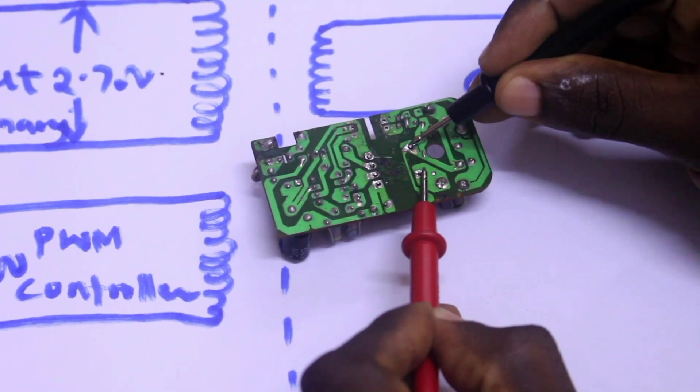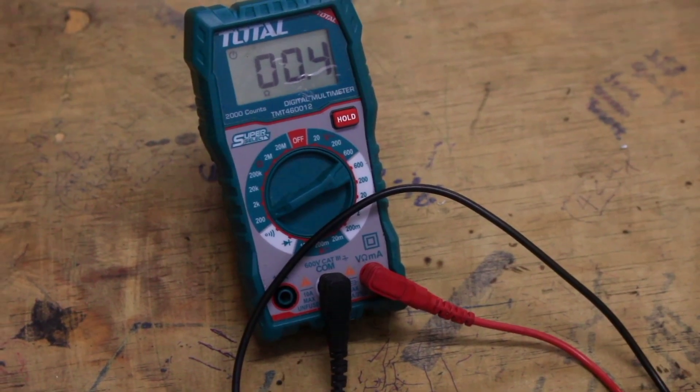So let's test if our transformer is open. The output winding is 0.4 ohm.